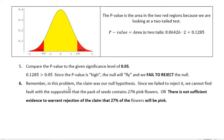Now, remember in this problem, the claim was the null hypothesis because it had an equation part in it, an equality part. So we just failed to reject it. Since we failed to reject it, we cannot find fault with the supposition that the pack of seeds contains 27% pink flowers. Another way to say that is there is not sufficient evidence to warrant the rejection of the claim that 27% of the flowers will be pink.